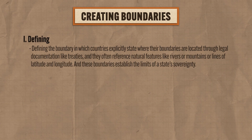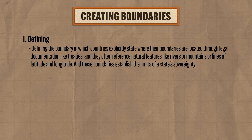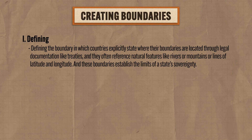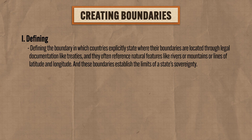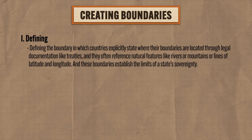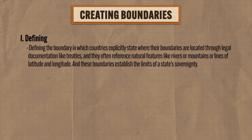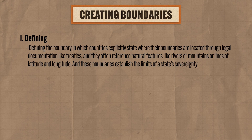But how are those boundaries created? The answer is that there are four phases that characterize the creation of boundaries. The first phase is defining the boundary, in which countries explicitly state where their boundaries are located through legal documentation like treaties, and they often reference natural features like rivers, mountains, or lines of latitude and longitude. These boundaries establish the limits of a state's sovereignty — we control this, but not this. Boundary defined.